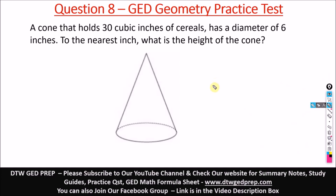This is question 8 of the GED Geometric Practice Test, a question on cone. It says a cone that holds 30 cubic inches of cereal has a diameter of 6 inches. To the nearest inch, what is the height of the cone?